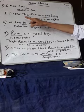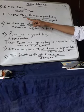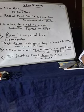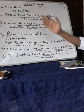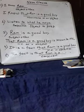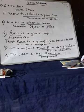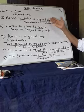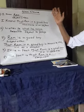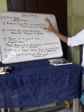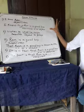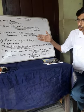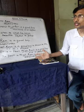Now, if I write 'I know that Ram is a good boy,' what do you know? You know 'that Ram is a good boy.' When you question the verb with 'what,' the entire clause 'that Ram is a good boy' functions as the object. That whole clause becomes the object. So 'that Ram is a good boy' is a noun clause functioning as the object of the verb.